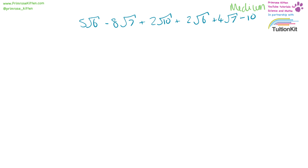Last one — a bit of a long one. 5 square root 6 minus 8 square root 7 plus 2 square root 10 plus 2 square root 6 plus 4 square root 7 minus square root 10. 5 square root 6 plus 2 square root 6 gives us 7 square root 6. Minus 8 square root 7 plus 4 square root 7 gives us minus 4 square root 7. Plus 2 square root 10 minus square root 10 gives us plus square root 10.